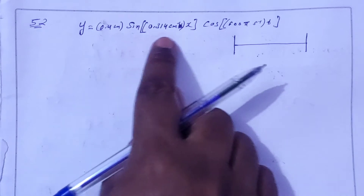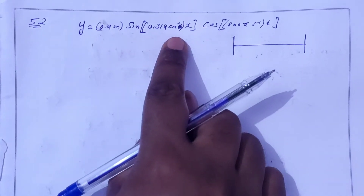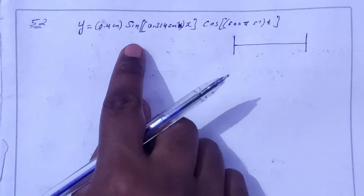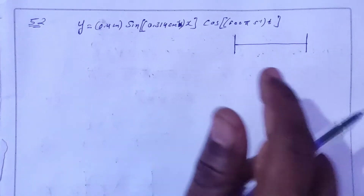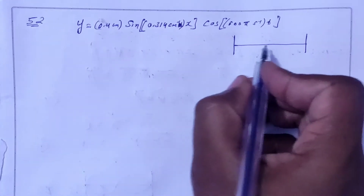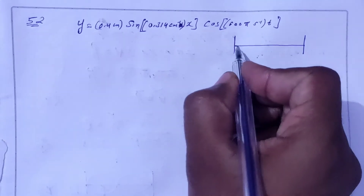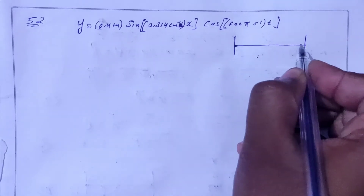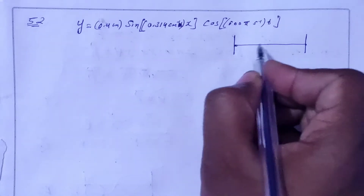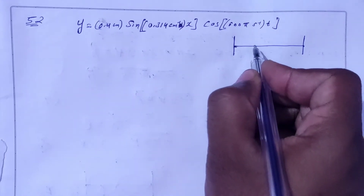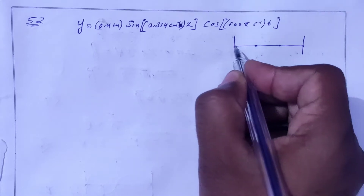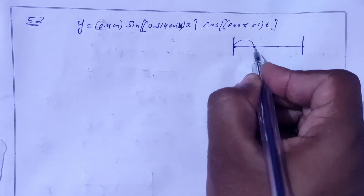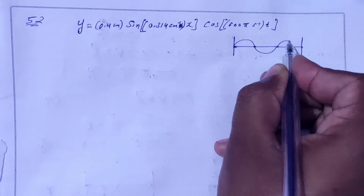The equation given is a standing wave, and this is the third harmonic. It is the third harmonic — three loops are formed. Here is a node and here is a node, and three loops are formed.